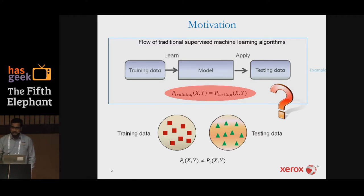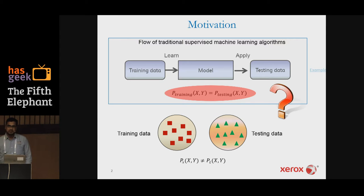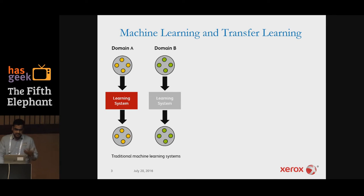The core problem is that the joint distribution of the two datasets doesn't match, causing performance to degrade. This happens because there are many products and domains that differ from training to test. Additionally, user-generated content is produced at an astronomical rate, so training data can become outdated, requiring expensive retraining with new labeled data every time.